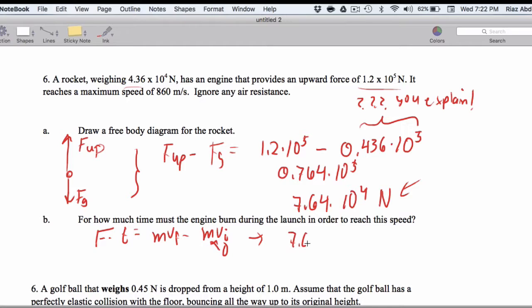So we're going to get 7.64 times 10 to the 4th equals, this is the weight, 4.36 times 10 to the 4th. So let's get the mass. If this is the weight, that equals MG. So 4.36 times 10 to the 4th equals M times 10. So the mass is 4.36 times 10 cubed kilograms. So this is 10 to the 4th. This is 4.36 times 10 cubed.